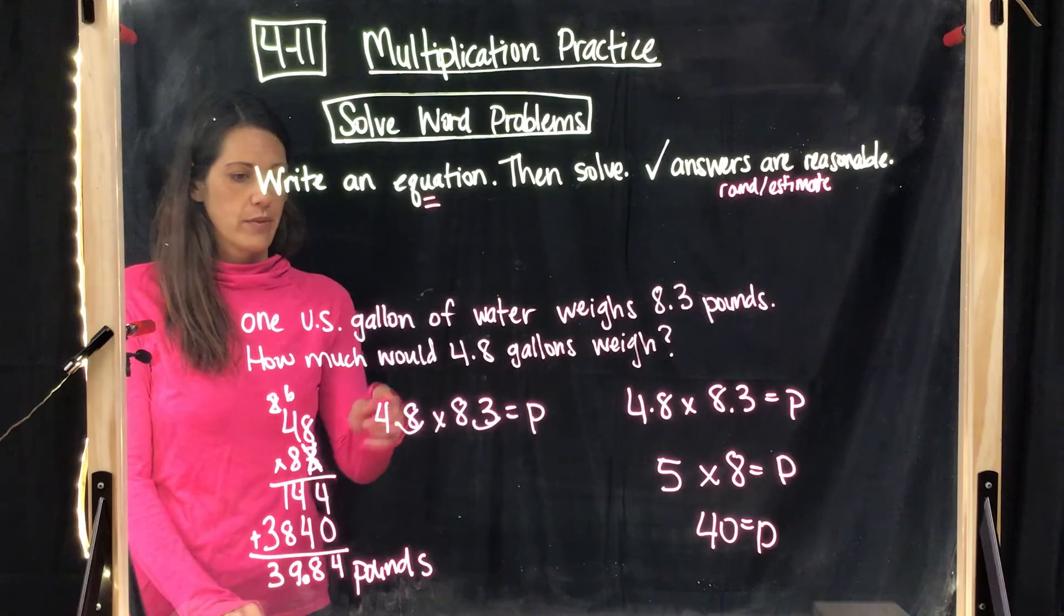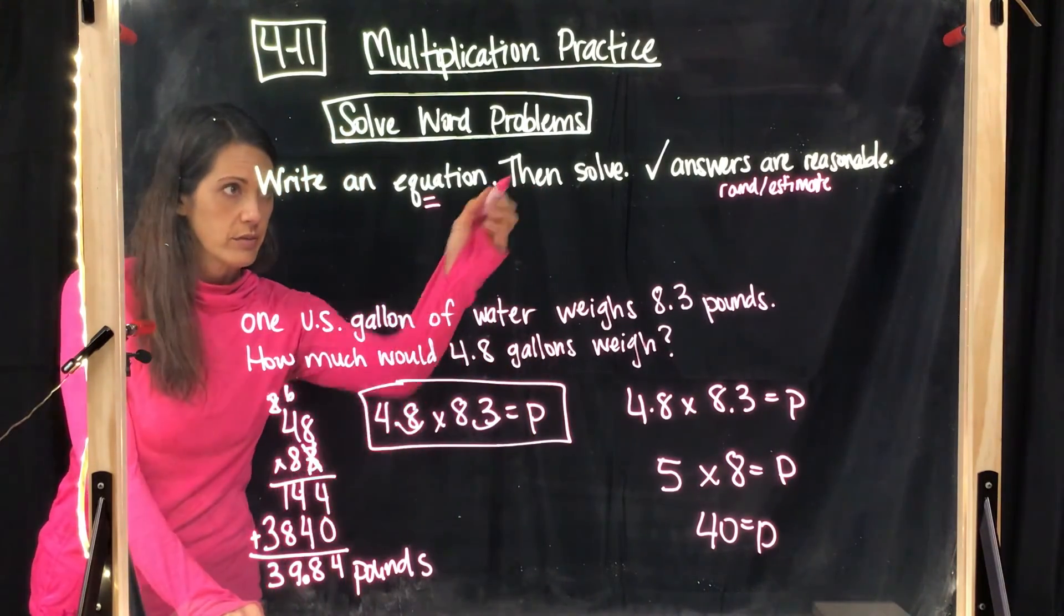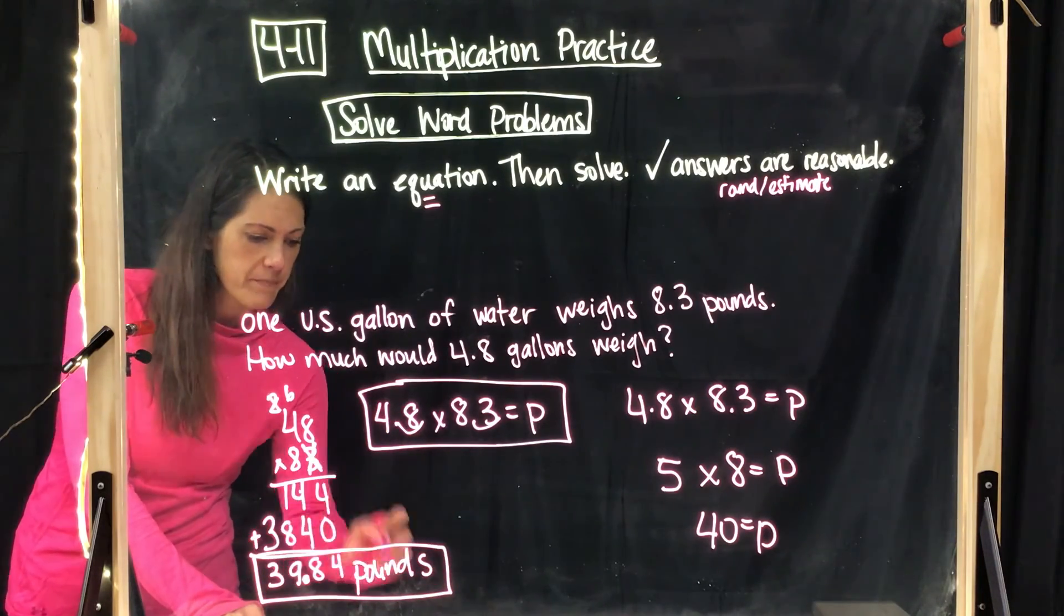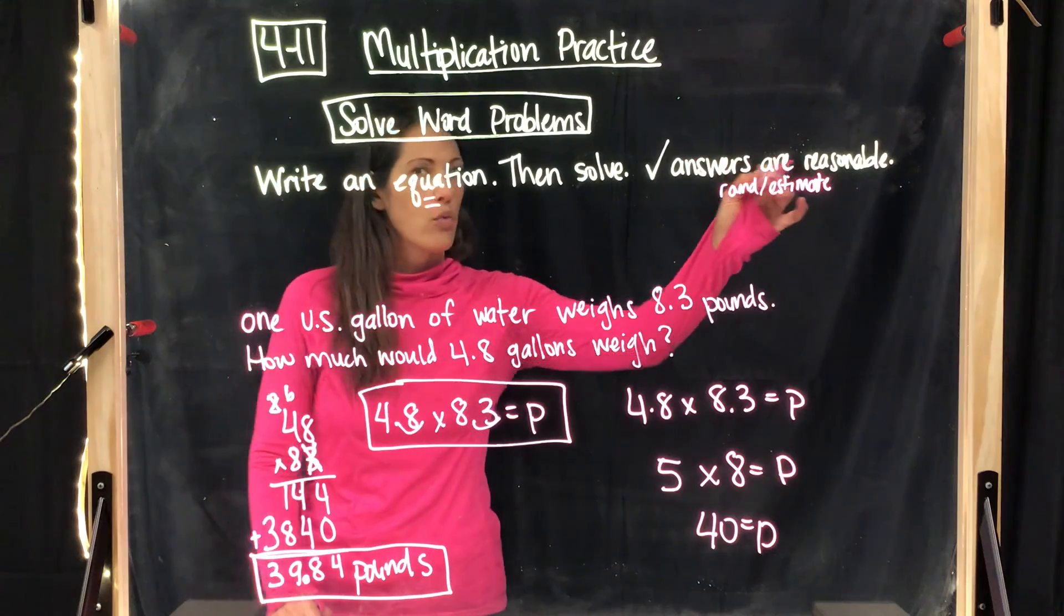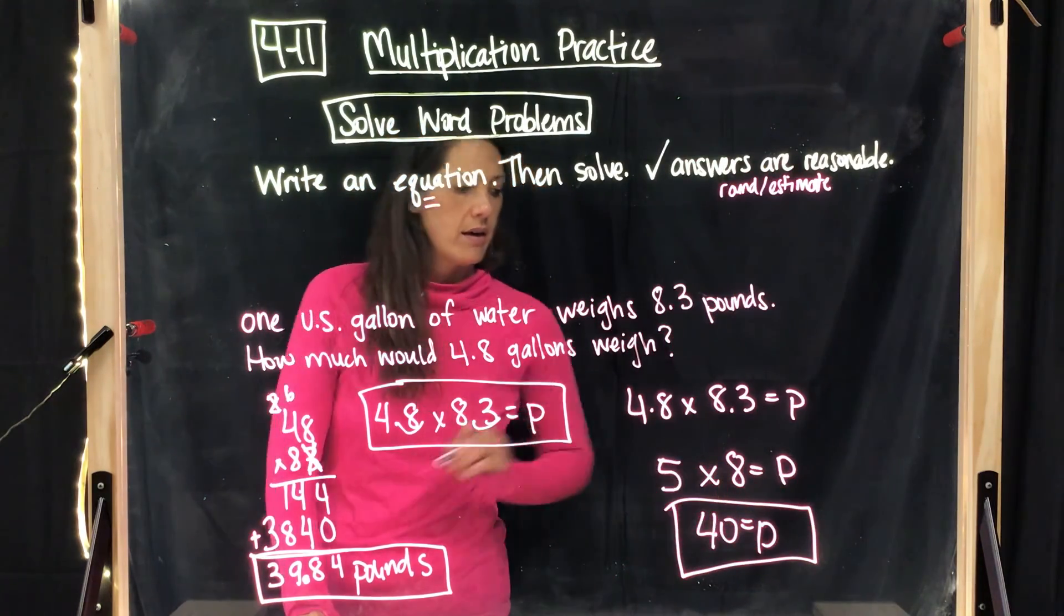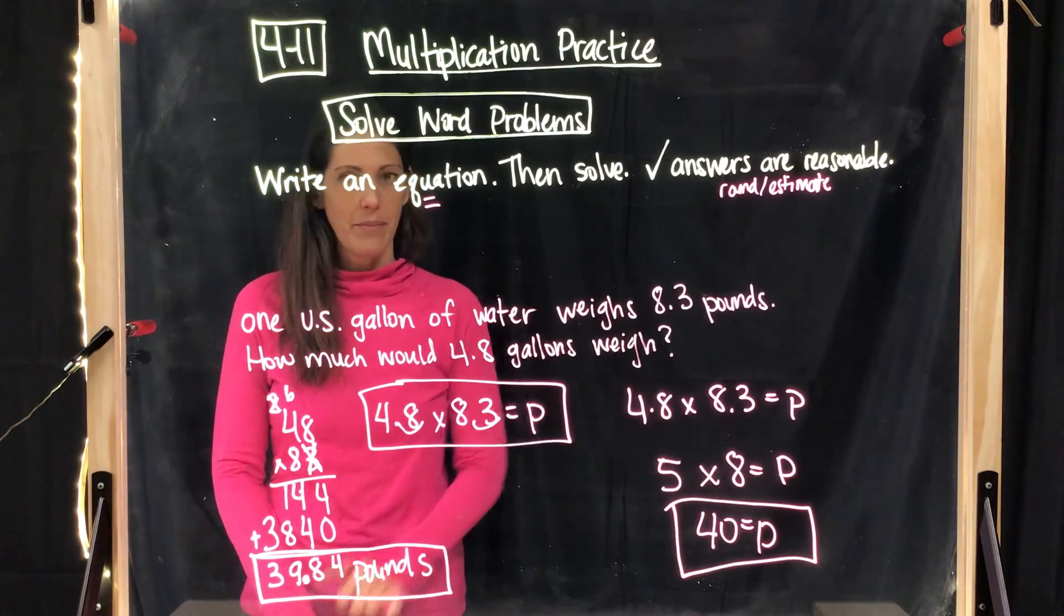So we have our three parts. We have our equation right here. We have our answer. We solved it right here with the label. We put pounds there. And we have our checking that we're reasonable. We estimated 40 pounds. So that's how I want you to do the rest of those problems on page 152.